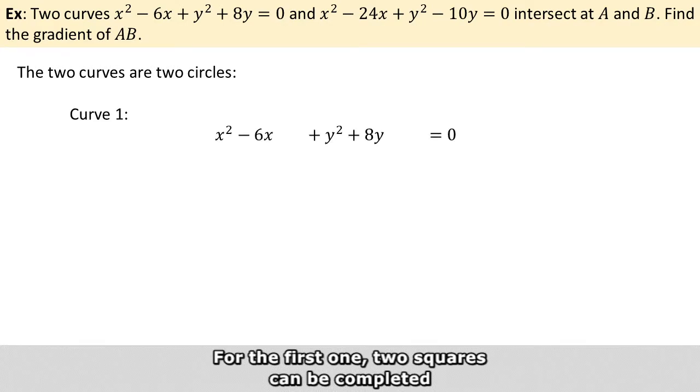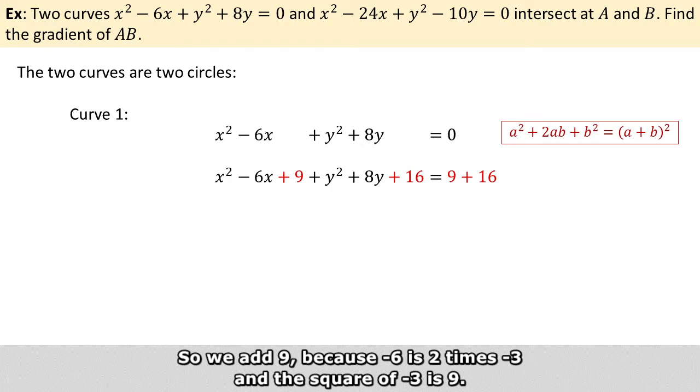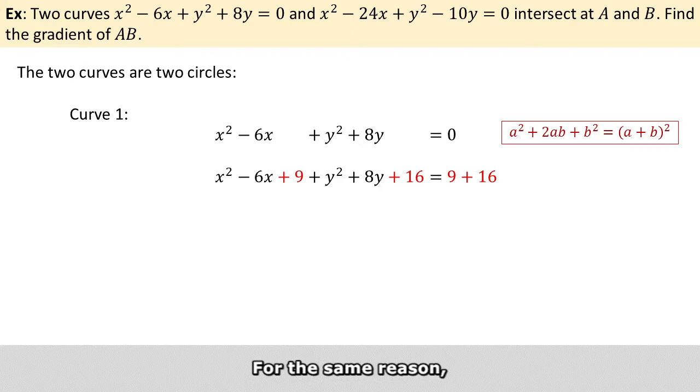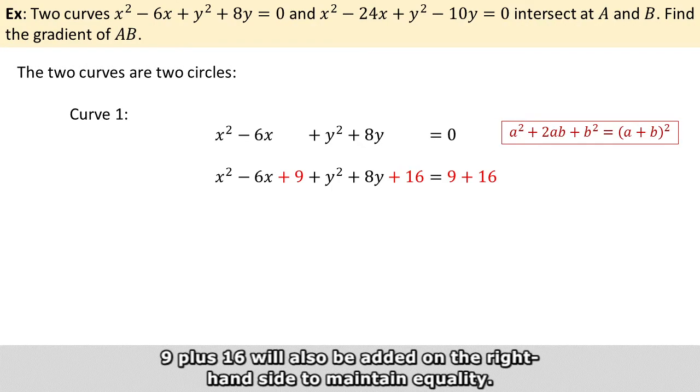For the first one, two squares can be completed following the general expression shown in the red box. So we add 9 because -6 is 2 times -3, and the square of -3 is 9. For the same reason, we add 16 because 8 is 2 times 4, and the square of 4 is 16. So 9 plus 16 will also be added on the right hand side to maintain equality.